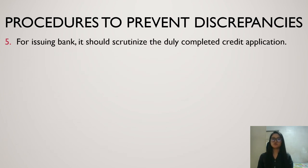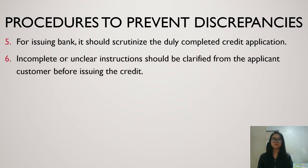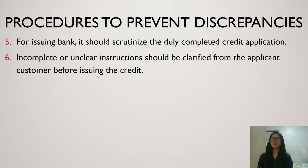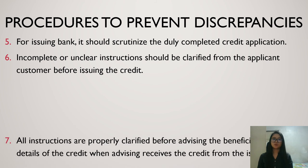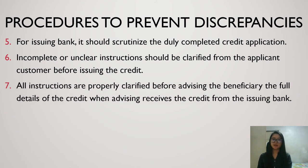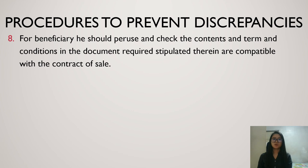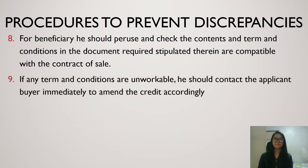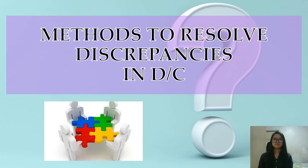For the issuing bank, it should inspect the duly completed credit application carefully, and all incomplete or unclear instructions should be clarified from the applicant customer before issuing the credit. After the advising bank receives the credit from the issuing bank, it needs to check the instructions again. If they are properly clarified, it can advise the beneficiary of the full details of the credit. The beneficiary should check that all the contents, documents required, and terms and conditions stipulated match the contract of sales upon receiving the credit. If the terms and conditions are not workable, the beneficiary should contact the applicant buyer immediately to amend the credit accordingly.